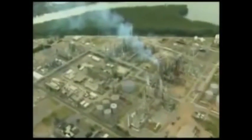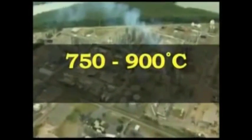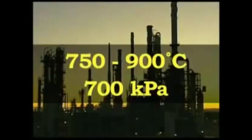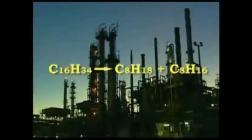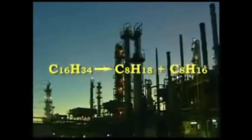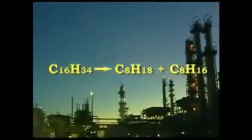Thermal cracking is the simplest and oldest process. The mixture is heated to around 750 to 900 degrees Celsius, at a pressure of 700 kilopascals, around seven times atmospheric pressure. This process produces alkenes, such as ethene and propene, and leaves a heavy residue.